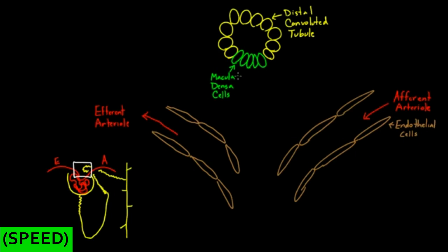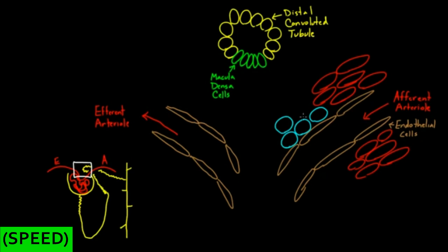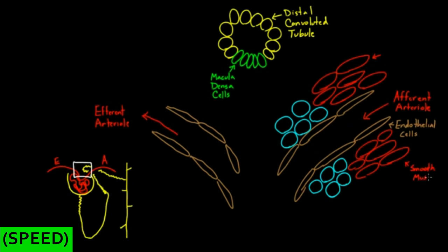Now, remember that arterioles don't have just one layer — arterioles have multiple layers. The inner layer, the tunica intima, is the endothelial cells. But there's also smooth muscle cells — a layer called the tunica media with smooth muscle cells. I'm going to try to draw some smooth muscle cells right there. And if you look closely under the microscope, you'll see there are also some interesting cells right here. I'm drawing them in blue just to highlight that they're different, but they're actually very similar to smooth muscle cells — in a way, they're specialized smooth muscle cells. These are smooth muscle cells on the afferent arteriole side, and you'll see them a little bit on the efferent arteriole side as well.